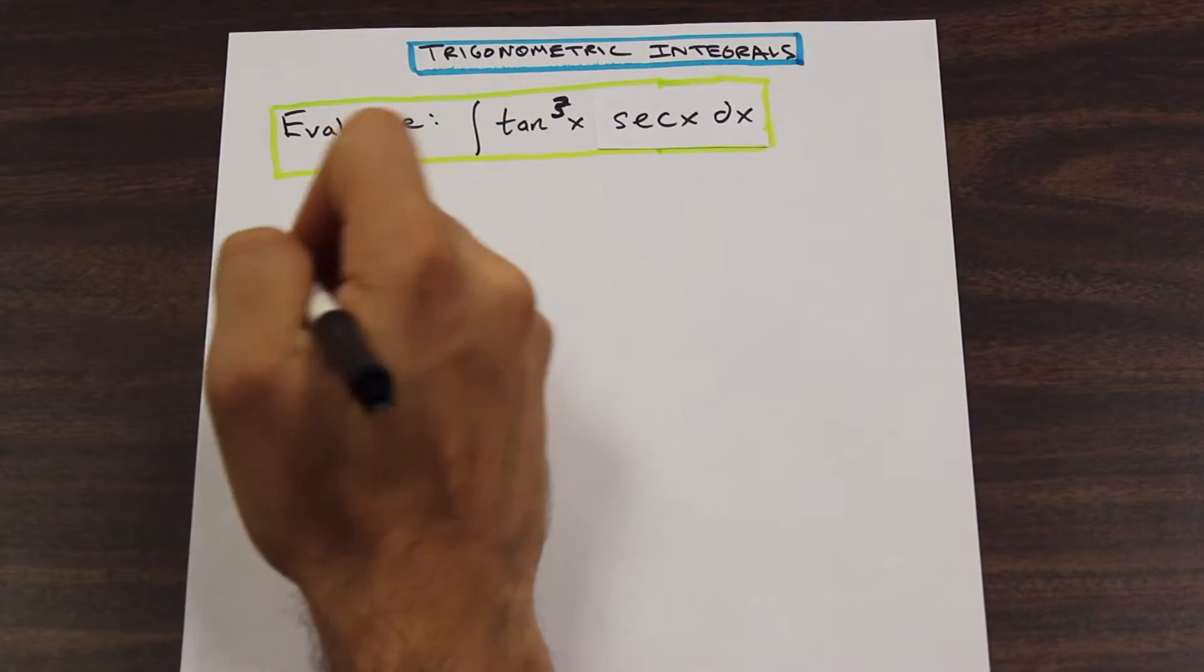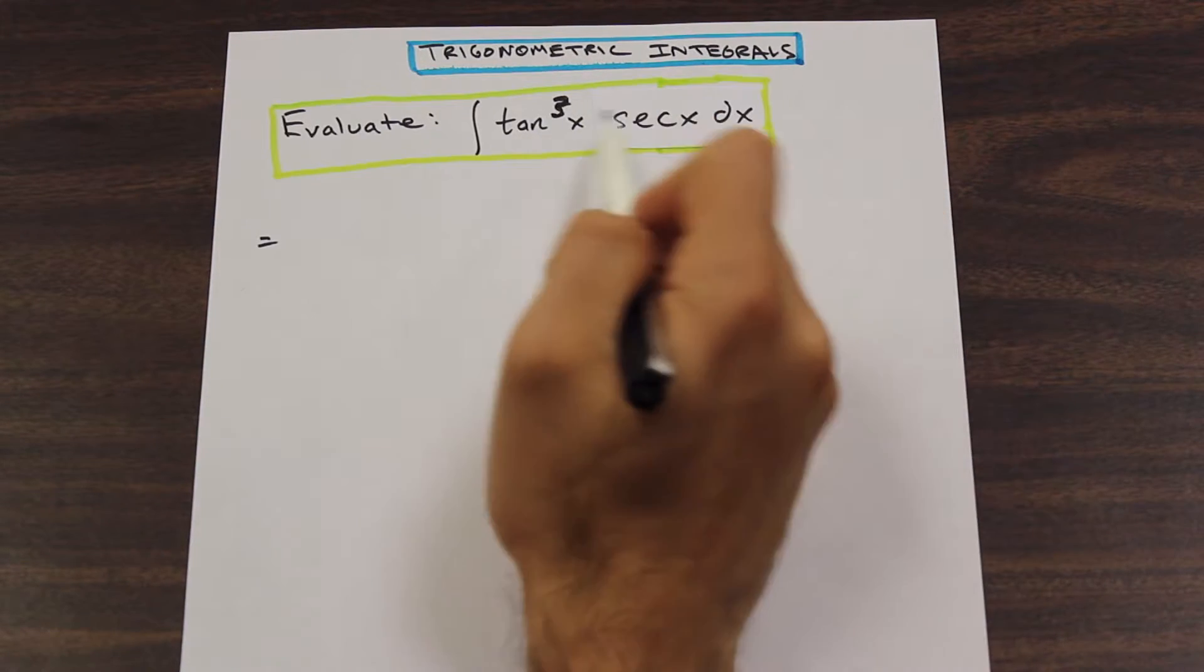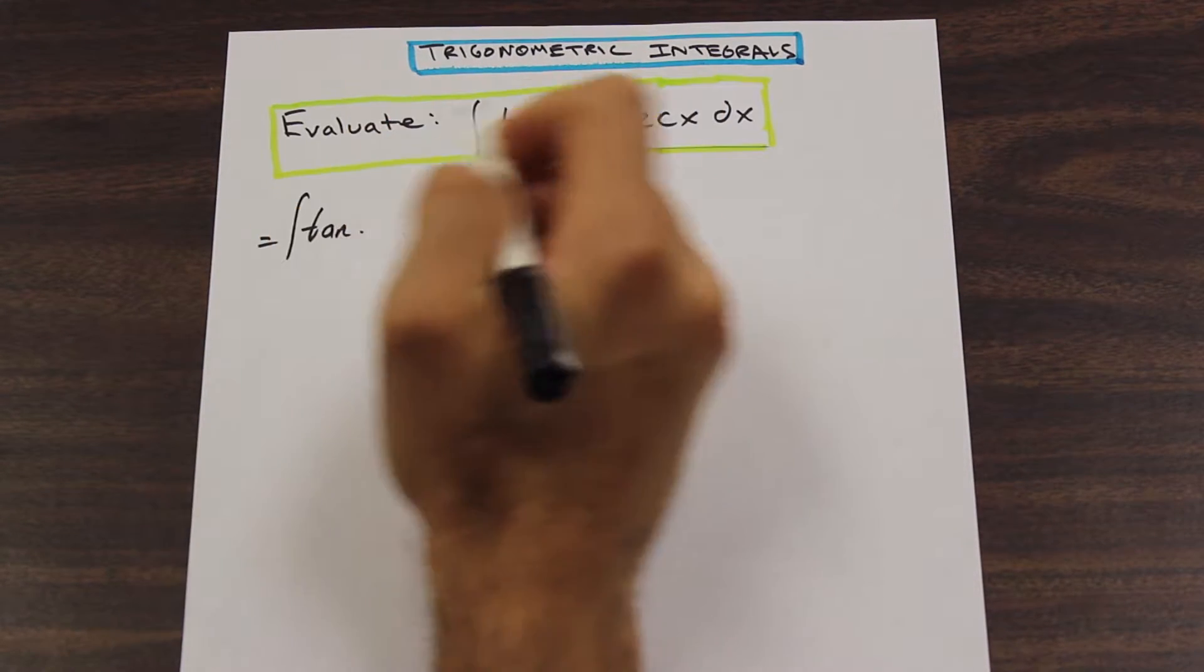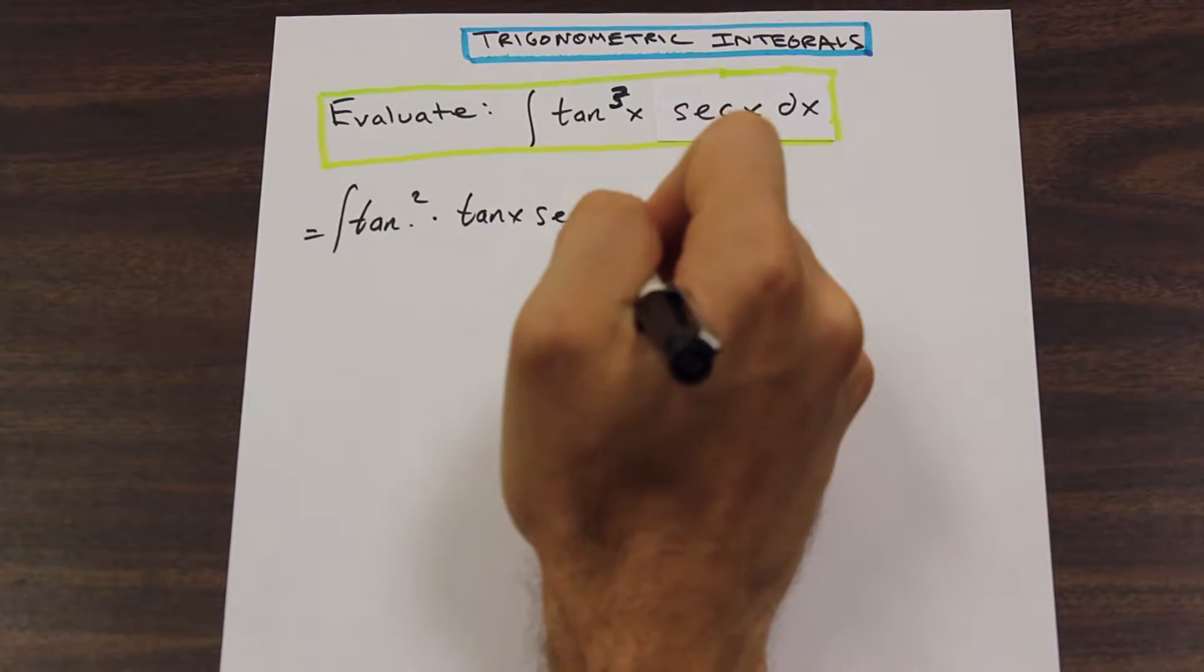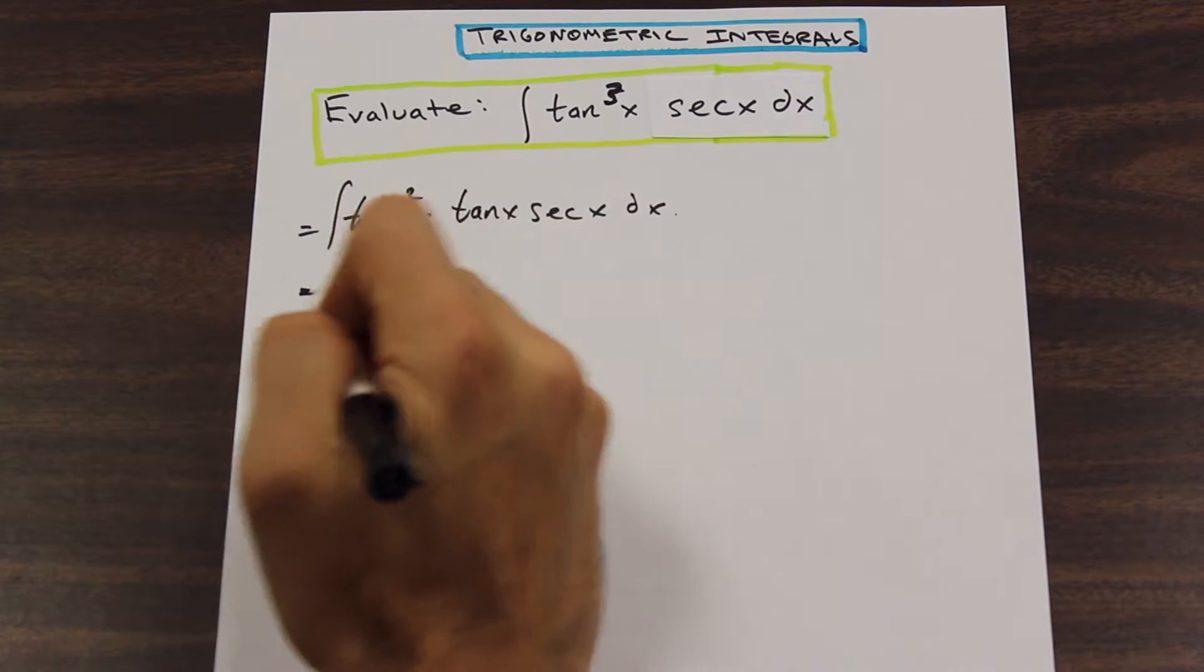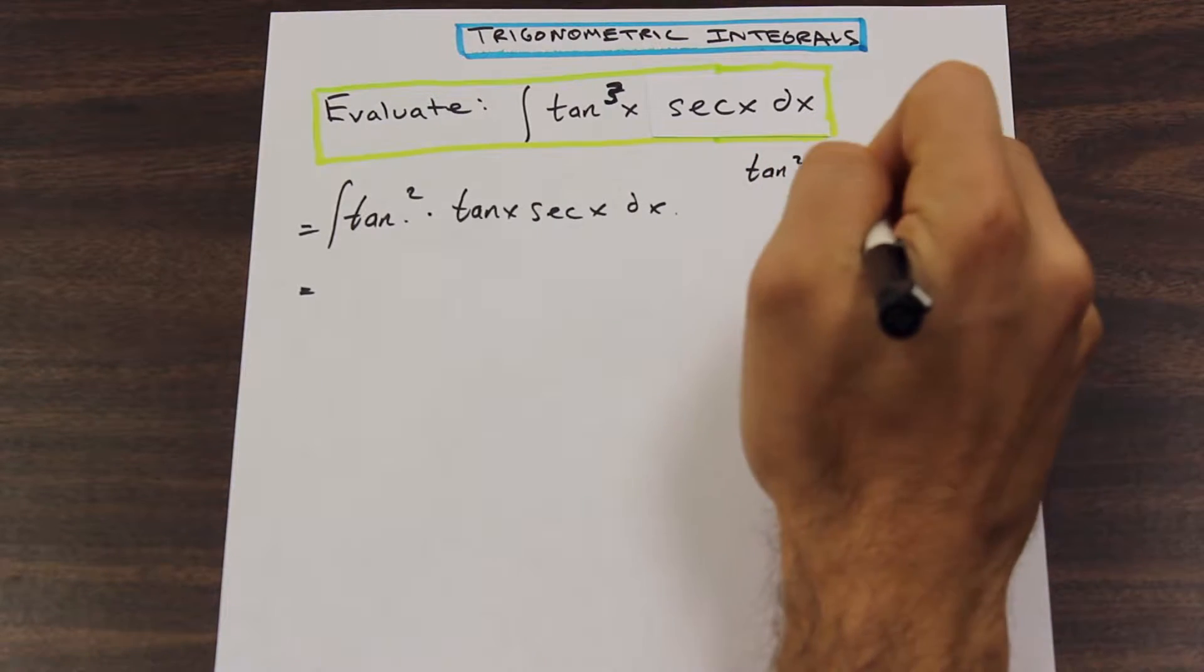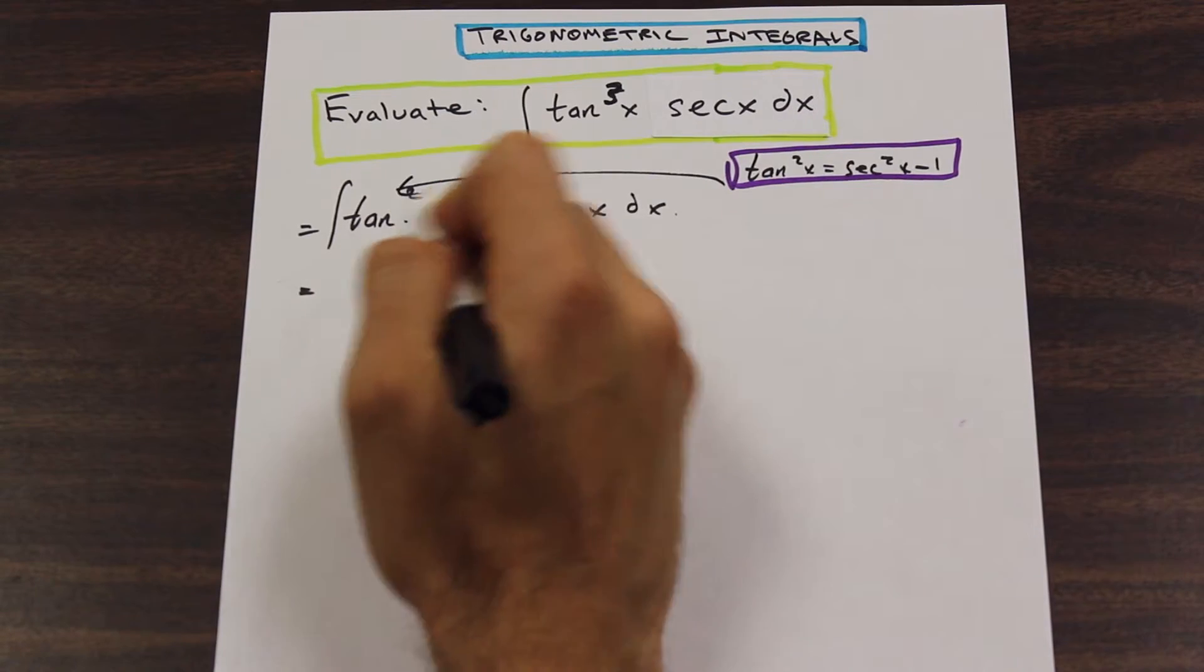Let's get started. So now let's do what we said. Whenever we have an odd tan, we're going to factor out a tan x secant x. So we have tan squared times tan x secant x dx. We're going to pretend that this term is kind of like its own little term there and keep it separate. And we know the identity: tan squared x is equal to secant squared x minus 1.